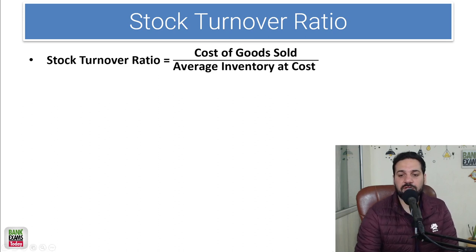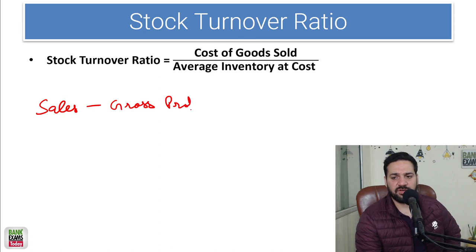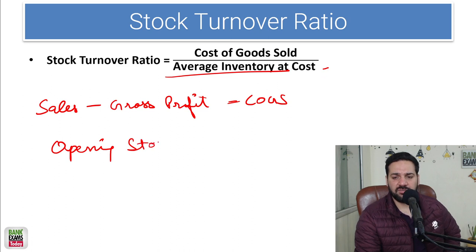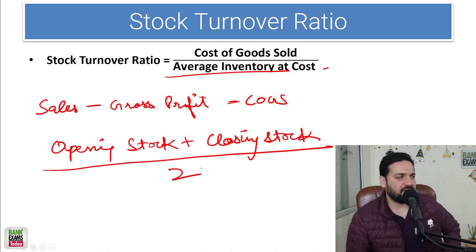I hope you know how to calculate the cost of goods sold. The cost of goods sold is your sales minus the gross profit — that's how you find the cost of goods sold. What is average inventory? It is the opening stock plus closing stock divided by two — that's how you calculate the average inventory.